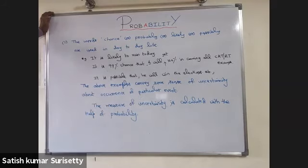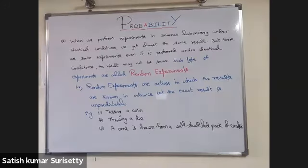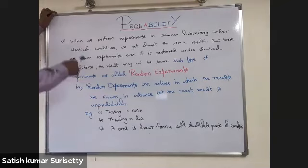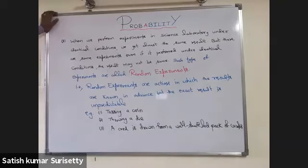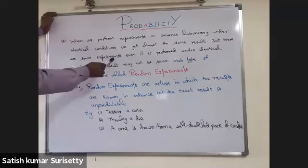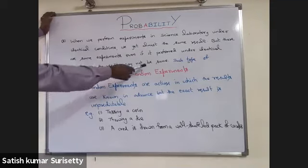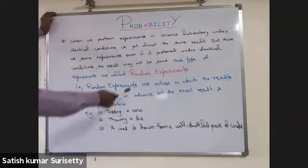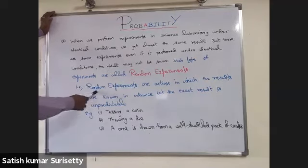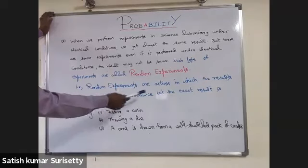The measure of uncertainty is calculated with the help of probability. When we perform experiments in a science laboratory under identical conditions, we get almost the same result. But there are some experiments where, even if performed under identical conditions, the result may not be the same. Such experiments are called random experiments.